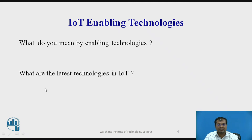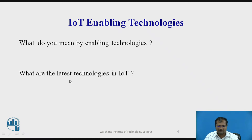What are the latest technologies in IoT? The latest technologies used in IoT are like IoT security, IoT analytics, IoT devices like IoT things, IoT networks, IoT processors, IoT operating system, event streaming processing, etc.